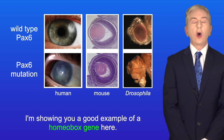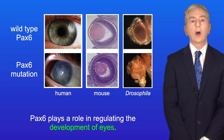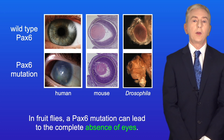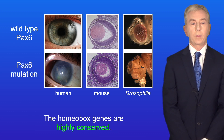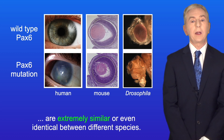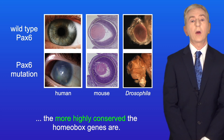A good example of a homeobox gene is PAX-6, which plays a role in regulating the development of eyes. Mutations in PAX-6 can result in blindness in both humans and mice, and in fruit flies, a PAX-6 mutation can lead to the complete absence of eyes. Homeobox genes are highly conserved, meaning the nucleotide sequences of homeobox genes are extremely similar, or even identical, between different species. The more closely related the species, the more highly conserved the homeobox genes are.